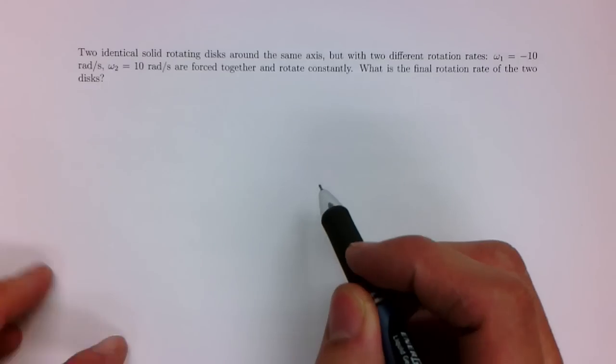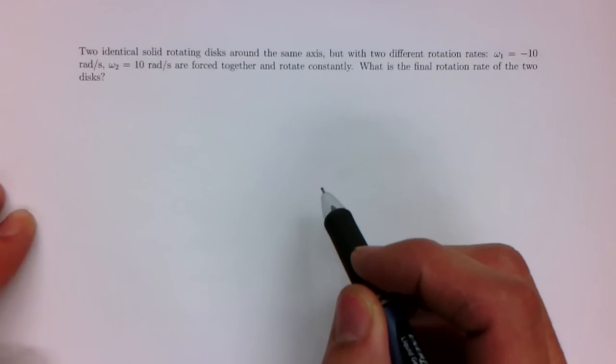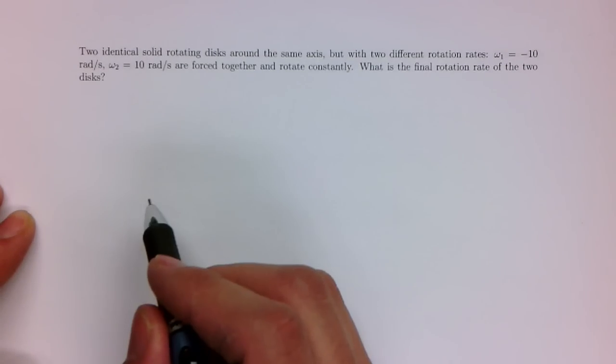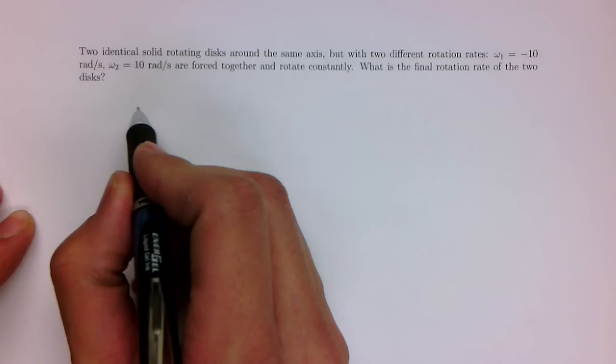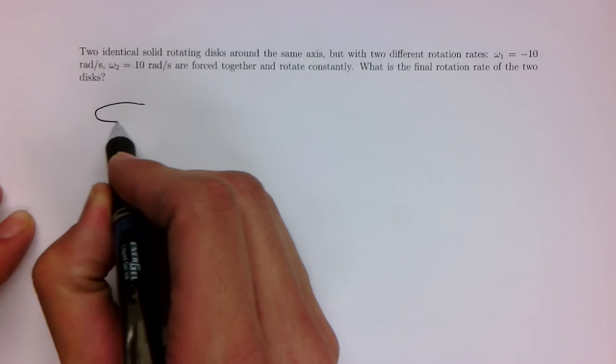So this is an angular momentum conservation problem. Let's basically draw the two discs. You have disc 1, a solid disc,